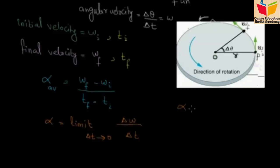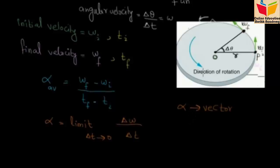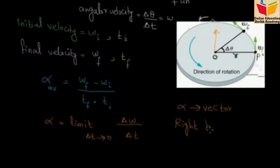We know that the linear acceleration is a vector quantity because both magnitude and direction are required to define it. In this way, the angular acceleration is also a vector quantity. The direction is along the axis of rotation, which we determine from the right-hand rule. What is the axis of rotation? If I show this orange line, this will be the axis of rotation.